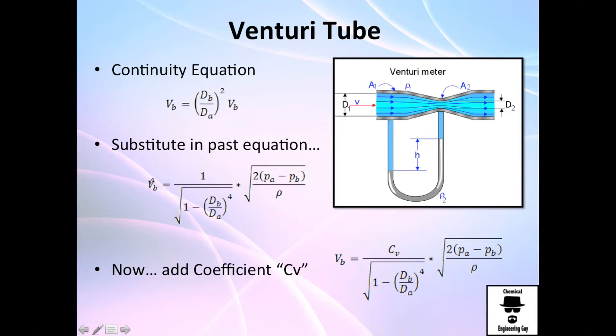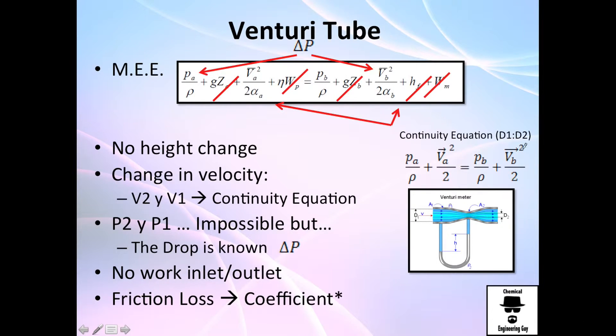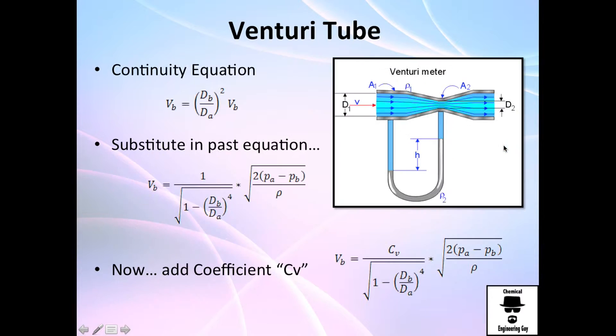You want to know the velocity. You will have to substitute in here. When you try to solve for velocity on B, you're going to have this one right here.